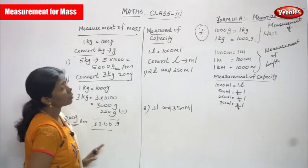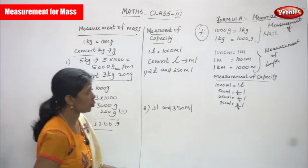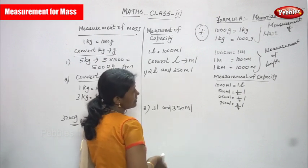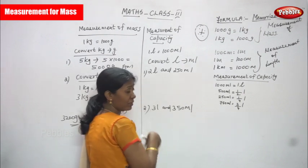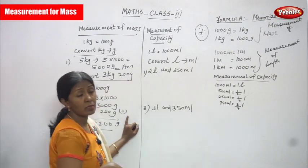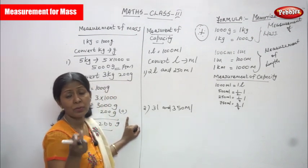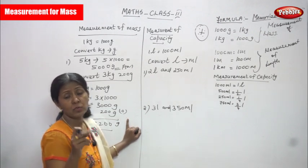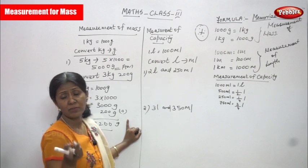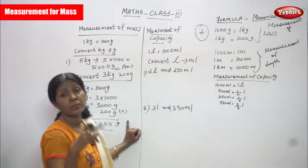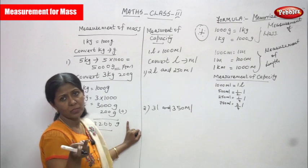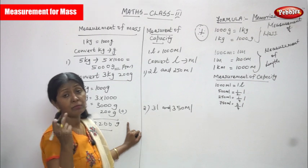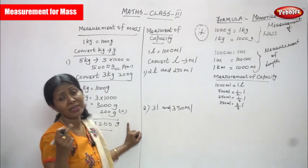Convert kilogram into gram is over — measurement of mass conversion is complete. Next, we have already seen measurement of length. 1 meter is equal to 100 centimeter. So converting 5 meter into centimeter: bigger unit to smaller unit means 5 into 100, and you get 500 centimeter.